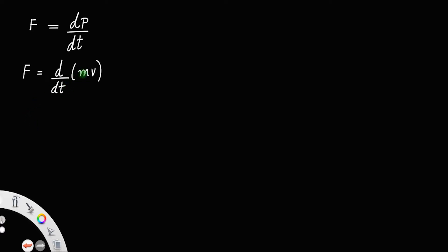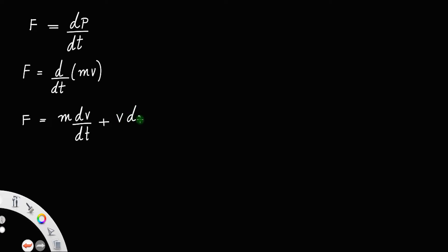Since this mass is no longer constant — since the particle can travel with the speed of light, it can change its mass — both mass and velocity are variables. So we should use the product rule for differentiation here: that is, mass of the body into derivative of velocity, plus velocity of the body times derivative of mass with respect to time. Call this equation number 1.